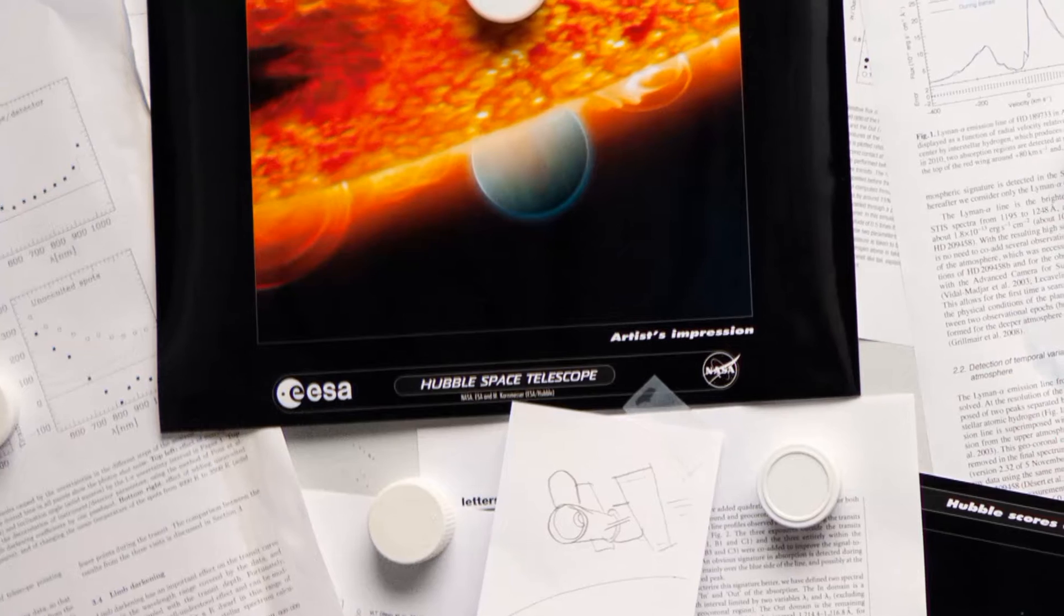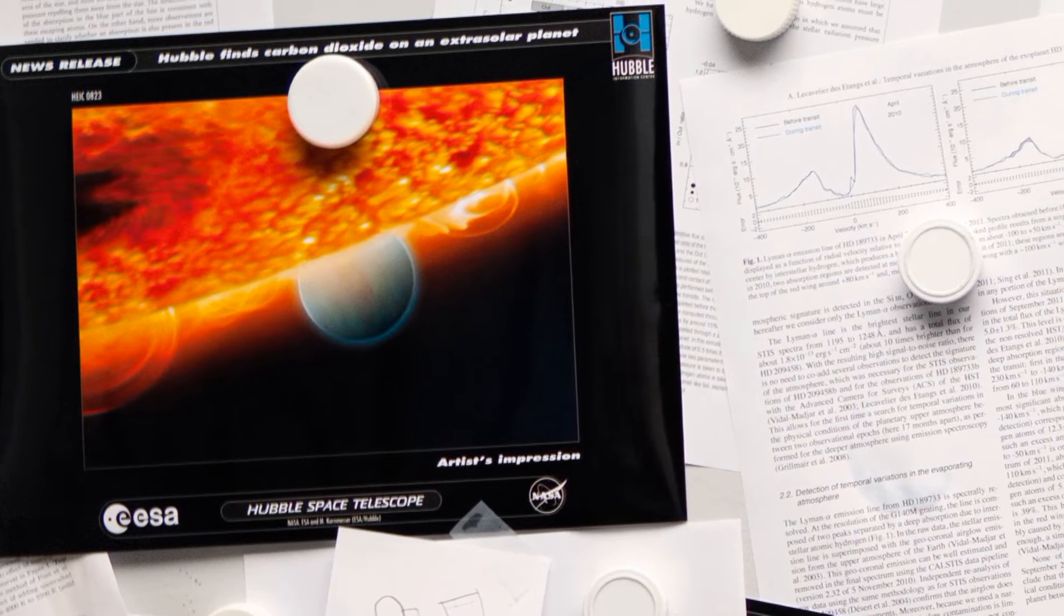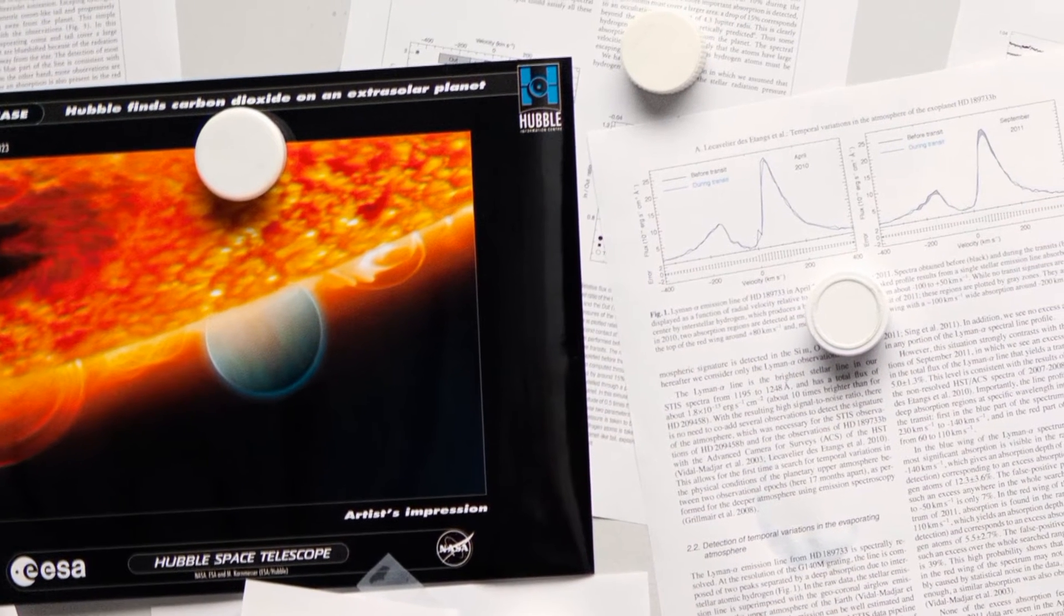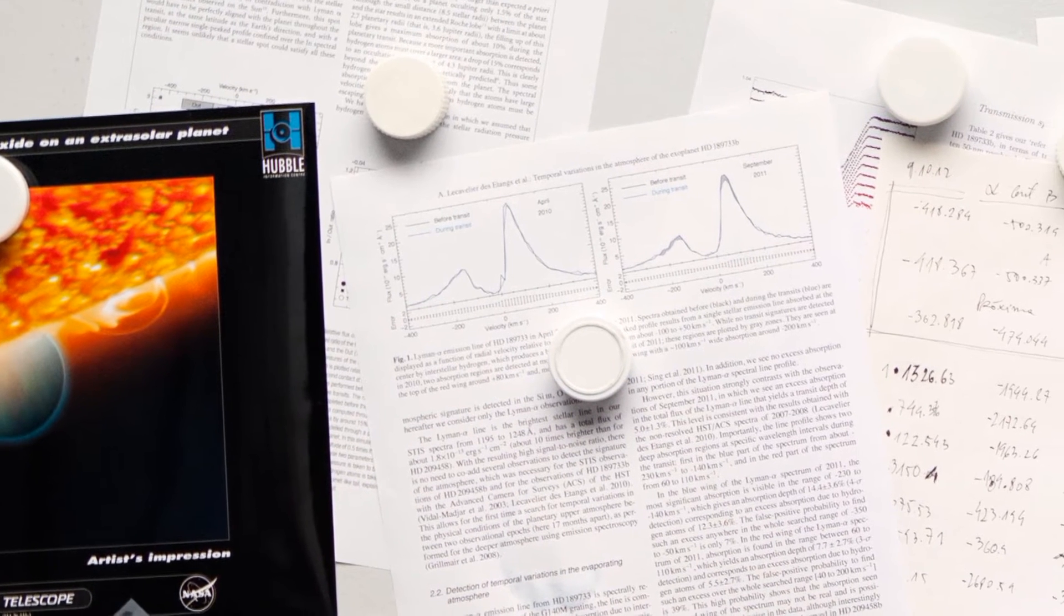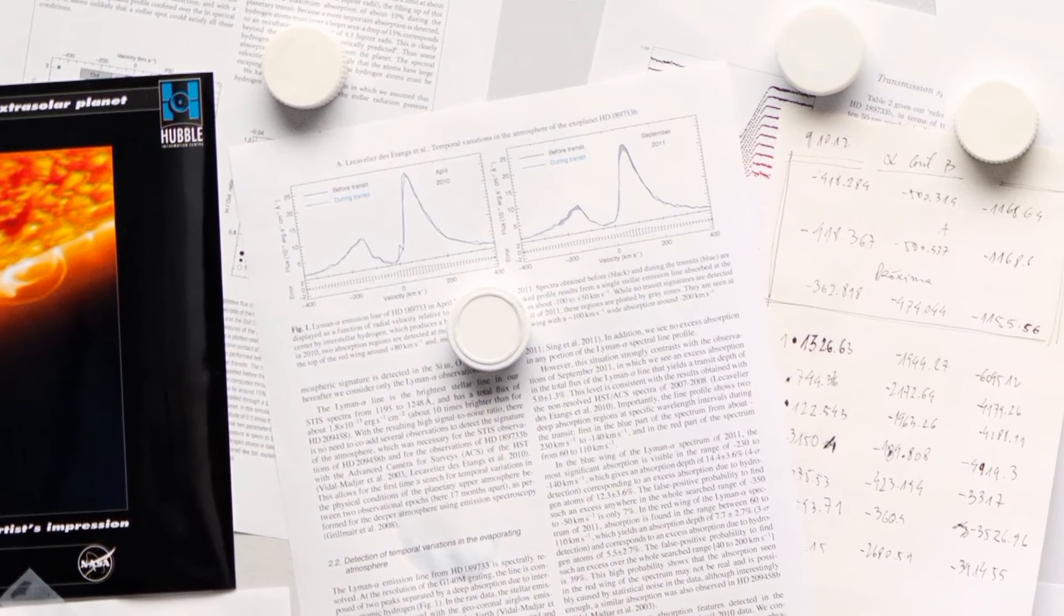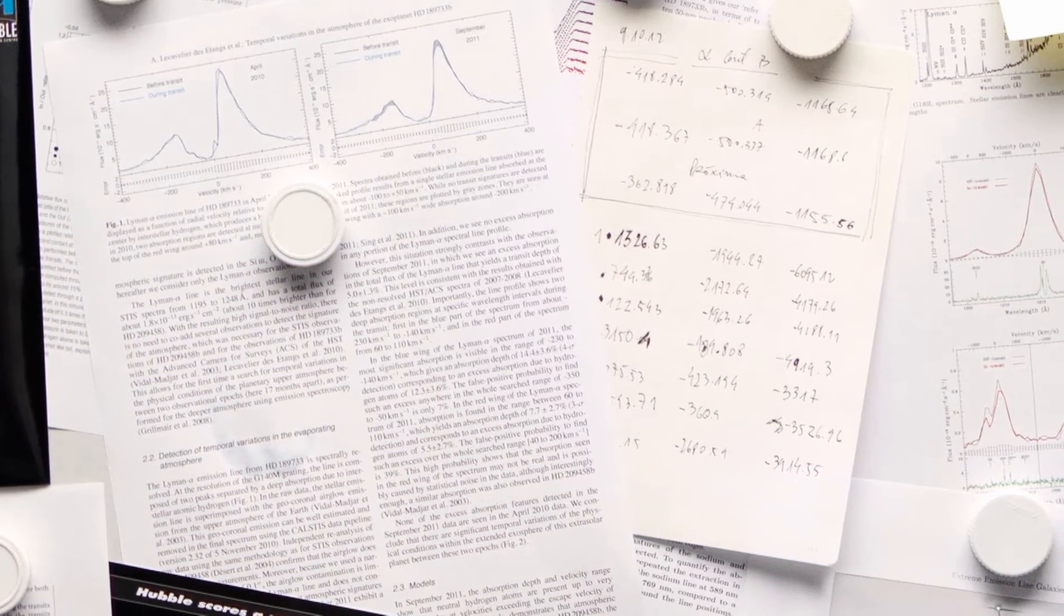...rainbows? Well, almost. Scientists aren't the most poetic folk, so they call them spectra instead of rainbows. And instead of printing the pretty colours, their scientific reports display their measurements as graphs.